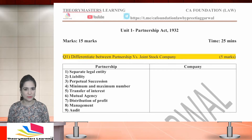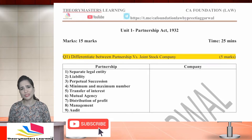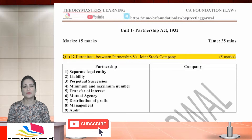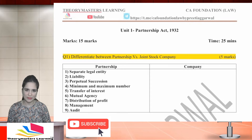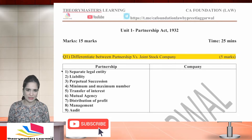Let's start Partnership Unit 1 today. I hope you have solved your paper, so let's discuss the solutions quickly. It's a 15-mark paper, 25 minutes. The first question was to distinguish between partnership and a joint stock company. I have written the head points — if you have written any five, you can give marks accordingly.